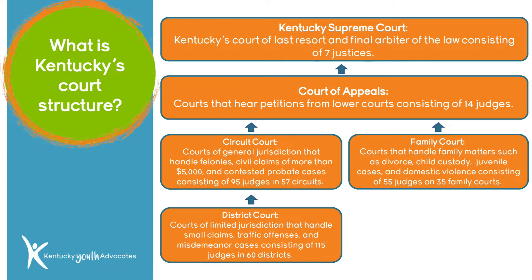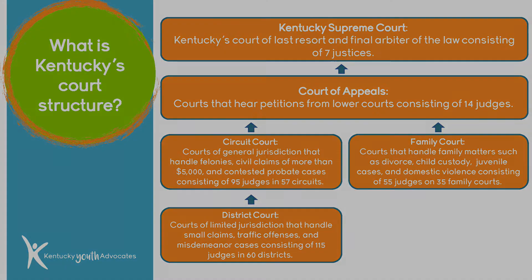Right above that is the Court of Appeals. This is the court that hears petitions from lower courts, which means whenever there's an appeal coming from district, circuit, or family, the Court of Appeals retries that case, and this consists of 14 judges. And then finally, at the very top is the Kentucky Supreme Court. This is Kentucky's Court of Last Resort and final arbiter of the law, consisting of seven justices, one of which is the chief justice who is selected by his or her peers.